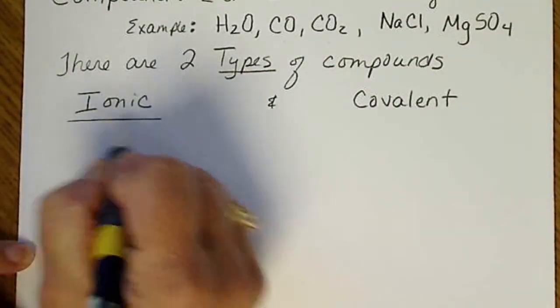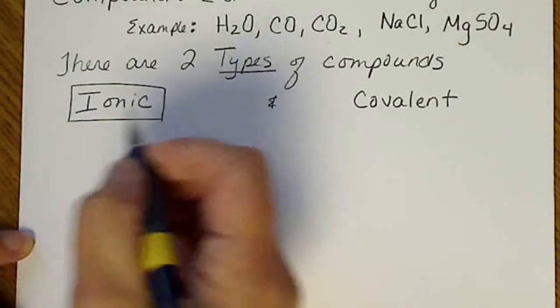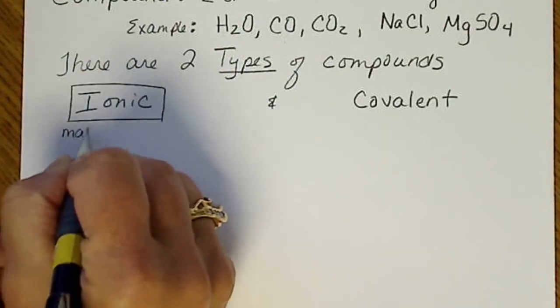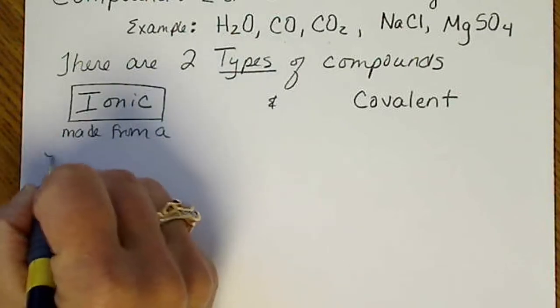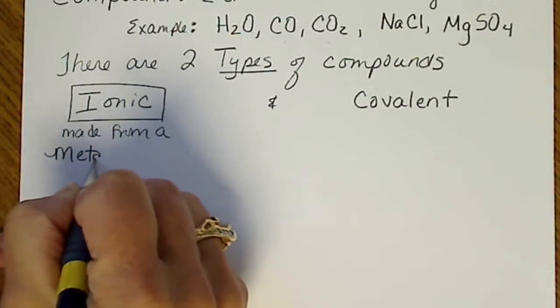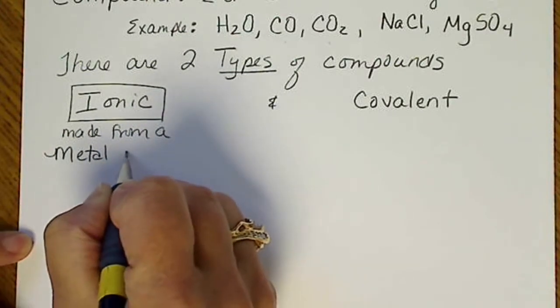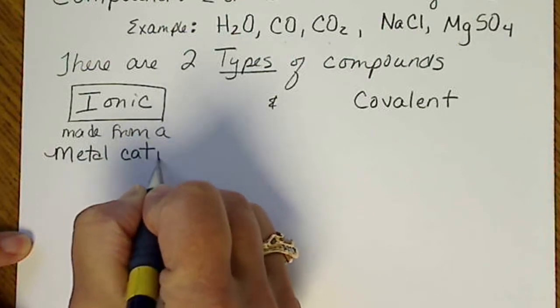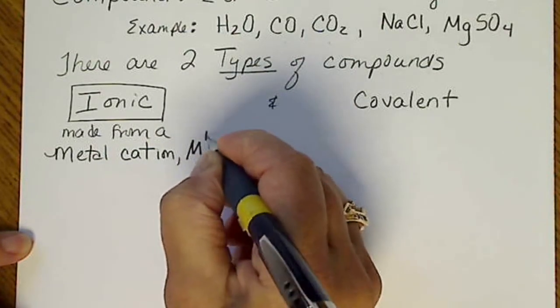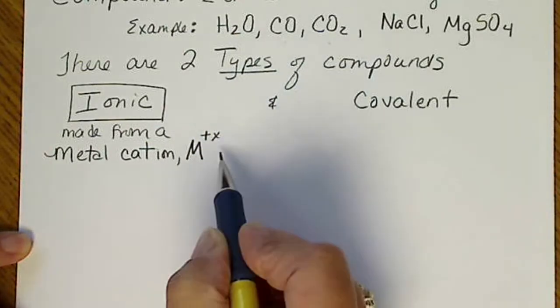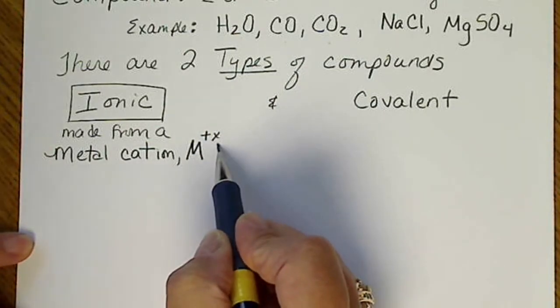An ionic compound is made of ions. It's made from a metal, and the metal is going to be an ion. We're going to see the word cation, which means that metal has some positive charge - a plus one, a plus two, or a plus three.